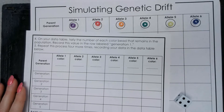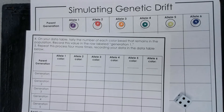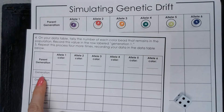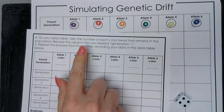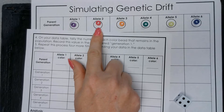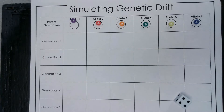Next, we're going to roll the dice to determine which allele is going to be passed to the next generation, which is generation one. For this particular simulation, we're going to model asexual reproduction. So, for example, if we roll the dice and we get a two, we're going to place a bead in generation one that's the same color as the bead in our allele two category.